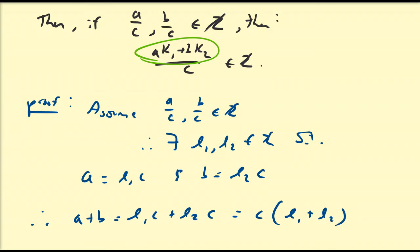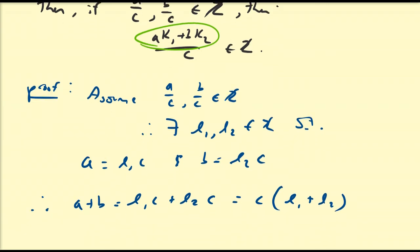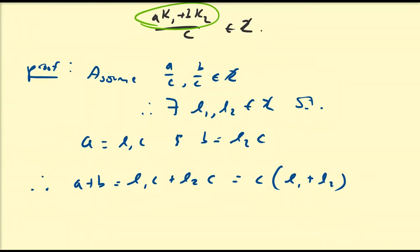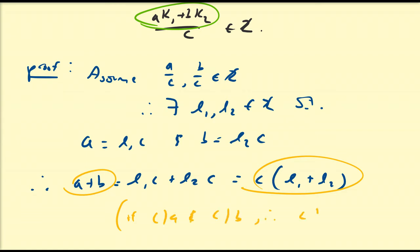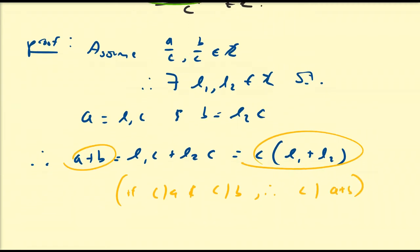Clearly, as a corollary, if C divides A and C divides B, then C divides A plus B. That would be the proof of that statement. Now we're going to spice this up just a bit to prove the theorem at hand.